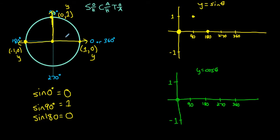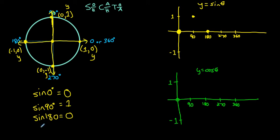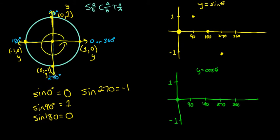When we've rotated 270 degrees from the initial arm, the terminal arm intersects the unit circle at (0, −1). That has a y-coordinate of negative 1, so sine of 270 degrees equals negative 1. When we rotate 360 degrees, that's coterminal with 0 degrees, so we're back to the point (1, 0), which has a y-coordinate of 0, and the ratio is back to 0.